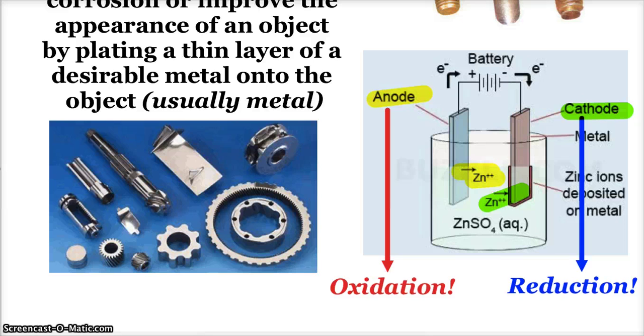Our last little topic of electrochem is that we can do some stoichiometry with our electrochemical processes. Usually you see it through the eyes of electrolysis, but that doesn't mean that's the only thing we can do—we could also potentially do some stoichiometry with a galvanic cell as well. This all comes about because of our good friend Mr. Faraday, and of course he showed us that the amounts of substances released at electrodes during electrolysis are related to the total charge that flowed into or flowed through the electric current—a beautiful stoichiometric relationship.